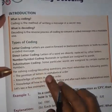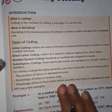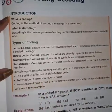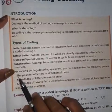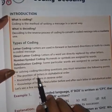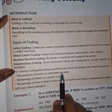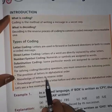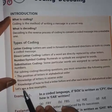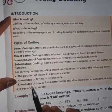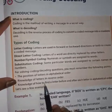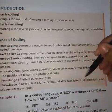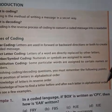The most important points you have to remember when solving coding and decoding questions: first, the position of letters in alphabetical order; second, knowledge of letters in reverse order; and third, knowledge of how to find a letter before and after each letter in alphabetical order.